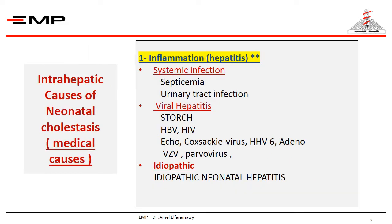At the top of the list of intrahepatic causes of cholestasis is inflammation due to perinatal or neonatal hepatitis resulting from infection, whether bacterial, viral, or parasitic. This diagnosis is considered in infants presenting with jaundice, hepatomegaly, vomiting, lethargy, fever, and petechiae.